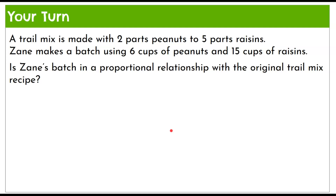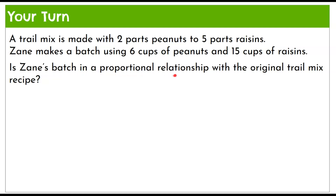Here's another one for you. Determine if a trail mix made with two parts peanuts and five parts raisins is proportional when Zane makes a batch using six cups of peanuts and 15 cups of raisins. Is Zane's batch in a proportional relationship with the original trail mix? Pause the video, create your bar diagrams, and come back to check your work. Good luck.